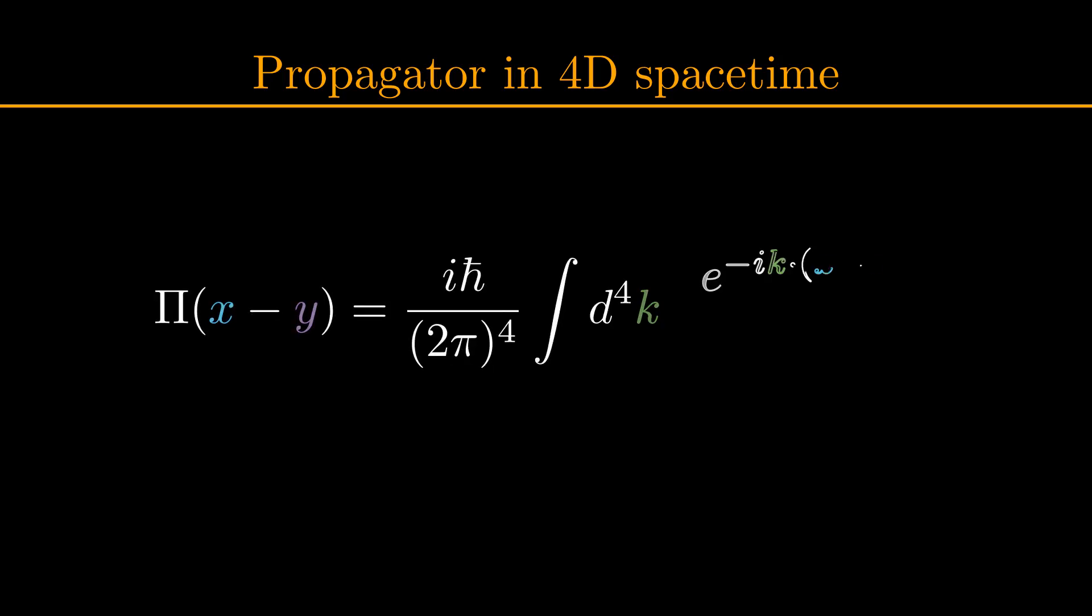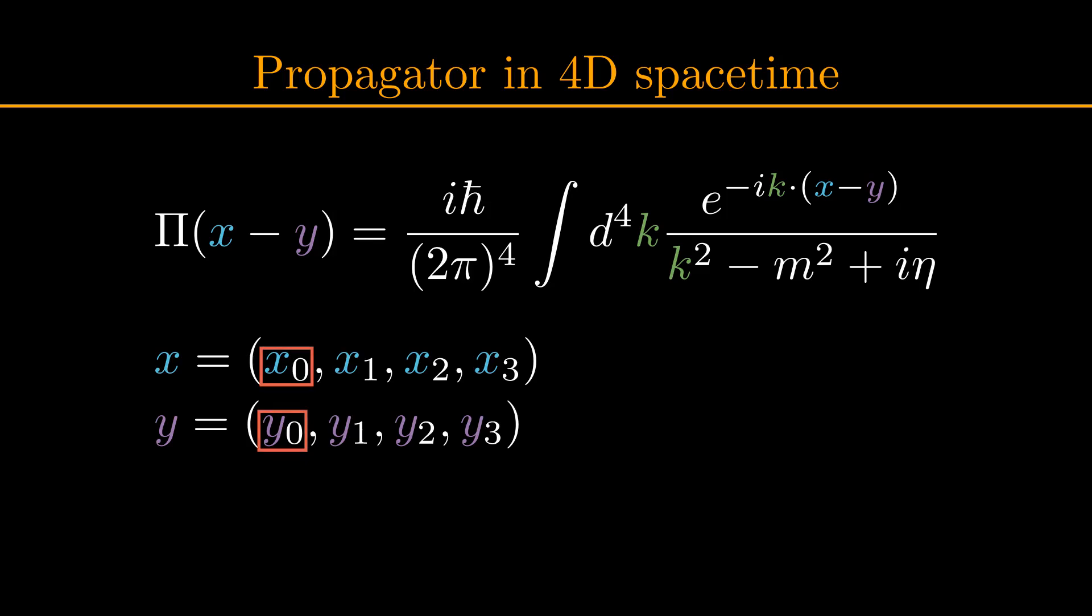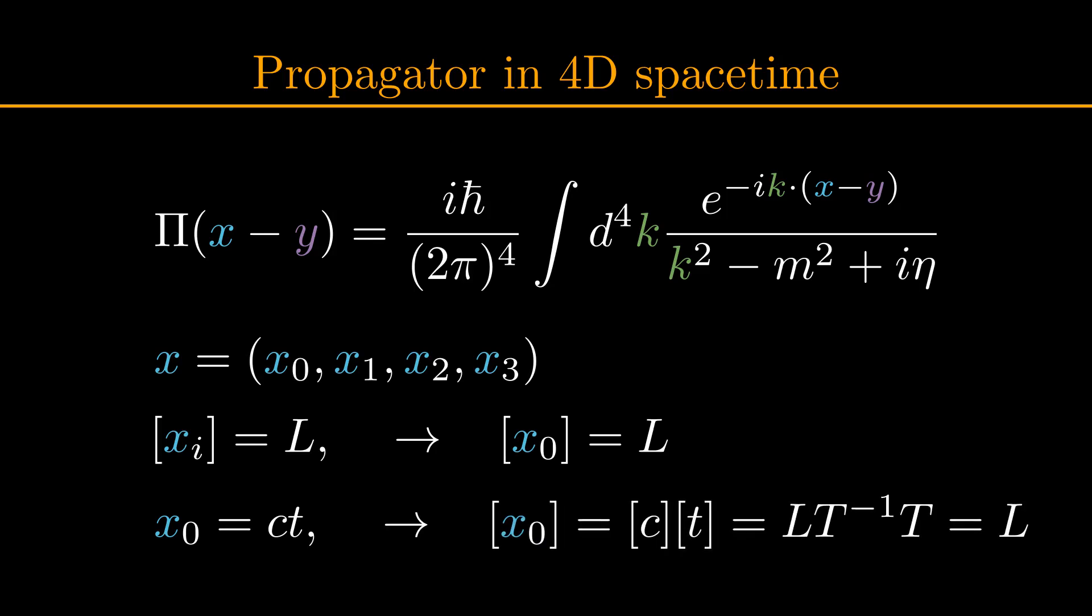Here we have the expression of the propagator in 4 dimensional spacetime. X and Y here are two events in spacetime, each written as a 4 vector where X0 and Y0 denote the time dimension, and XI and YI denote the spatial dimensions. XI are just distances in units of length, so to make the whole 4 vector have units of length, we say that X0 must have units of length as well. We can also accomplish this by writing X0 as the speed of light c times time t. Because the speed of light has units length over time, it perfectly cancels the dimension of time again, and we get the desired dimension of length in our 4 vector.